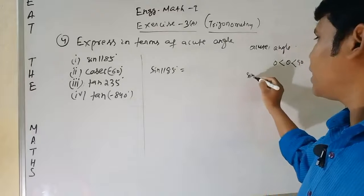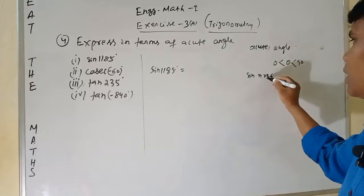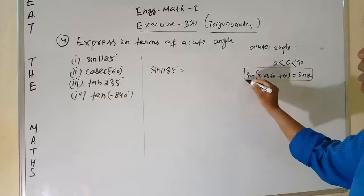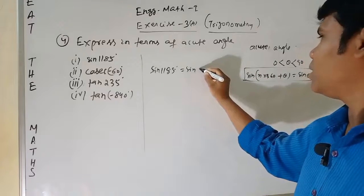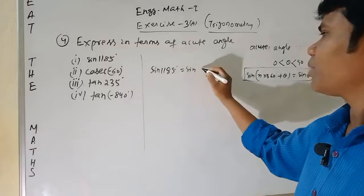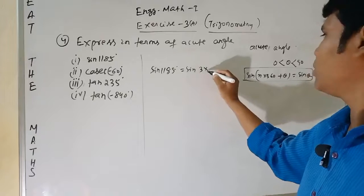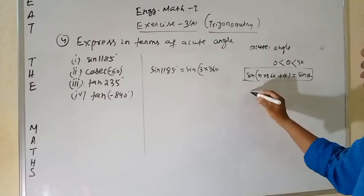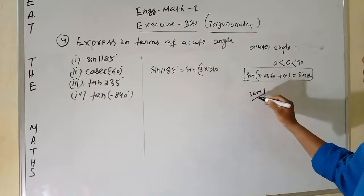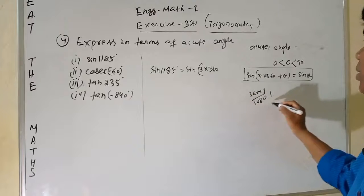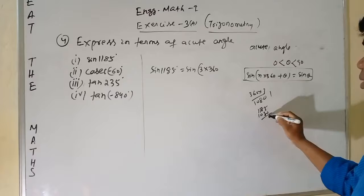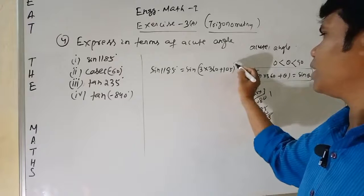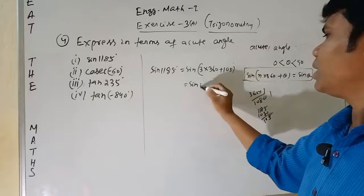We use the formula: sin(n×360° + θ) = sin(θ). So we express sin(1185°): 3×360 = 1080. Then 1185 − 1080 = 105. So sin(1185°) = sin(3×360° + 105°) = sin(105°).